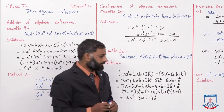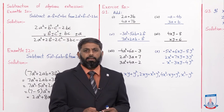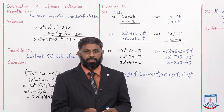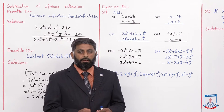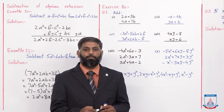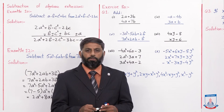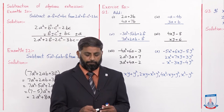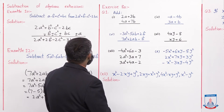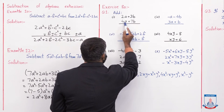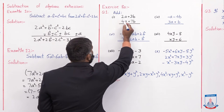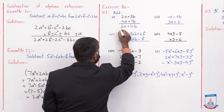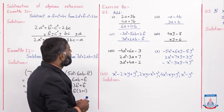Students, abhi humne addition aur subtraction of algebraic expressions ki kuch examples samjhi. Ab hum exercise 8A start karenge. Exercise mein pehle addition ke questions hain, vertically likhe hue. Aap vertically ya horizontally solve kar sakte hain, aapki choice hai. Question 1: add (2a + 3b) aur (4a + 7b). 2a + 4a like terms ko add kiya to 6a, plus 3 + 7 = 10b. Answer: 6a + 10b.